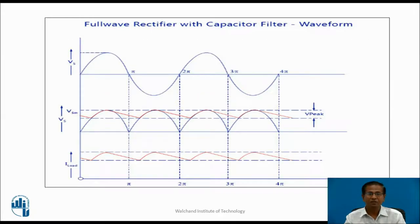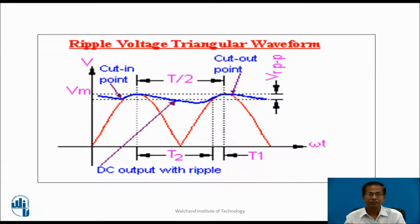These are the waveforms. The first waveform represents the input signal. The second one shows the output of the rectifier and the output of the filter circuit. The third one represents the ripples in the form of a triangular wave — this is the ripple voltage waveform.